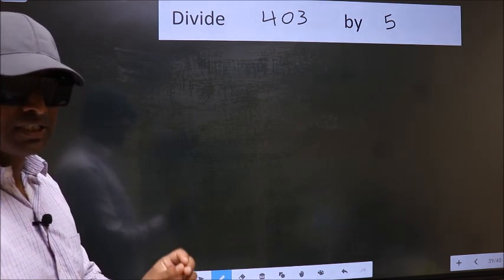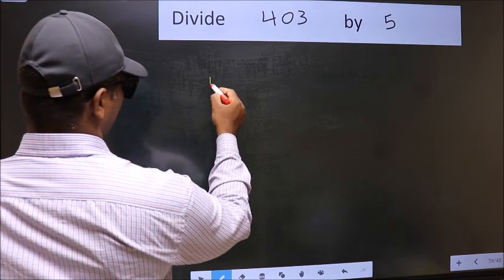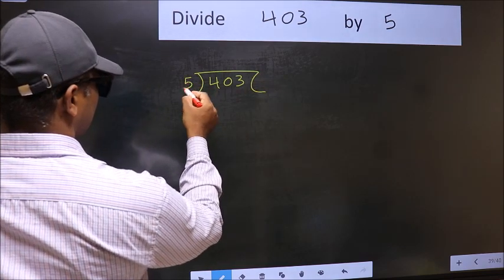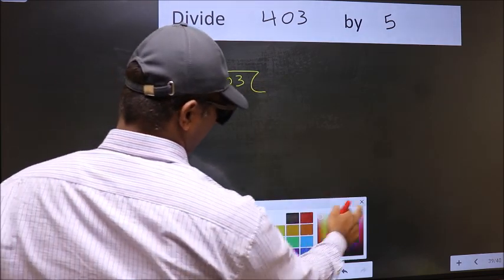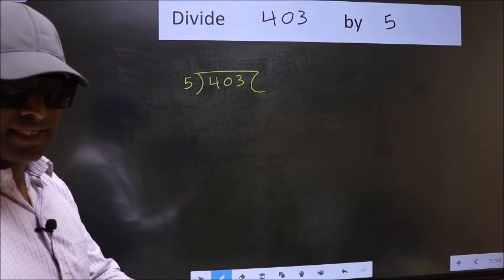But before that, we should frame it in this way: 4, 0, 3 and 5 here. This is your step 1. Next.